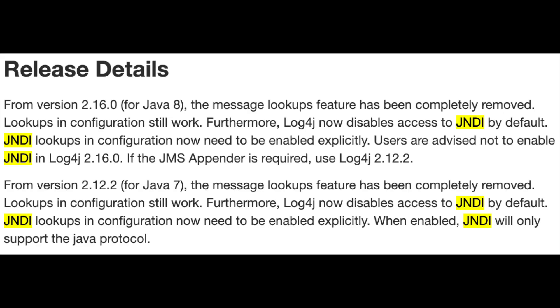In terms of mitigation, Apache did release a new version of the log4j software library. It is definitely advised to download and upgrade to the latest patch on their website. This new version disables access to JNDI by default — so if you want to use JNDI configuration, you need to enable that explicitly. The message lookup features have also been completely removed. At a high level, an attacker can perform remote code execution by sending specifically crafted log messages to your application, hence the name log4shell.